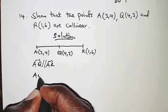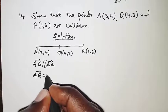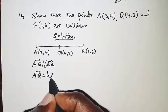We will simply show that AQ is a scalar multiple of AR. So we will have AQ is equal to h of AR.